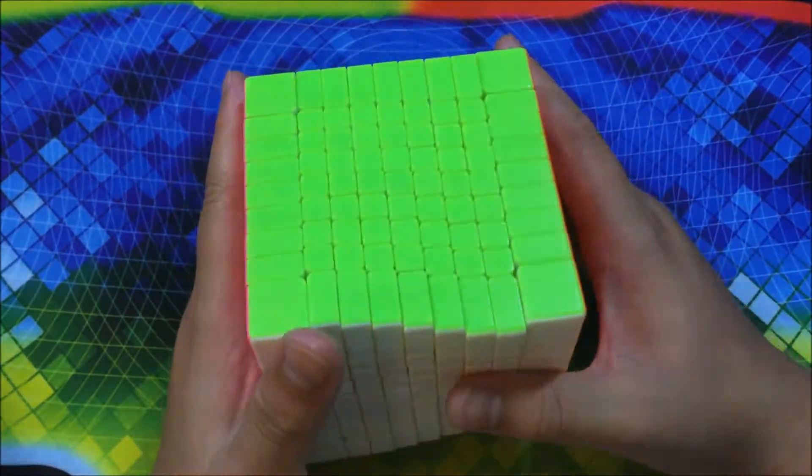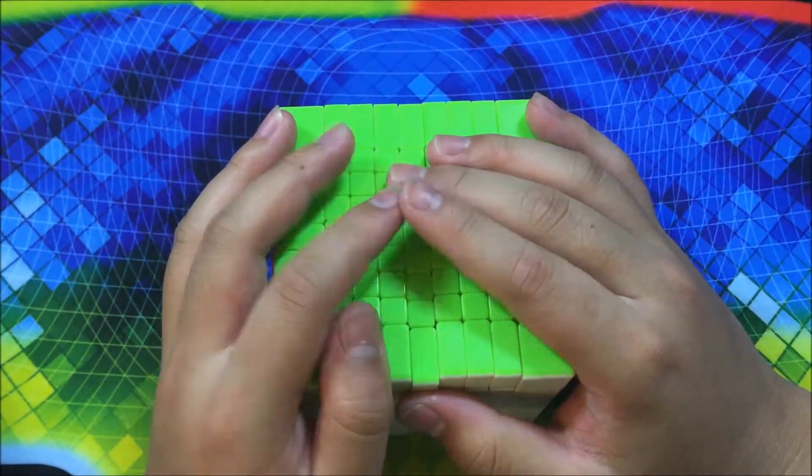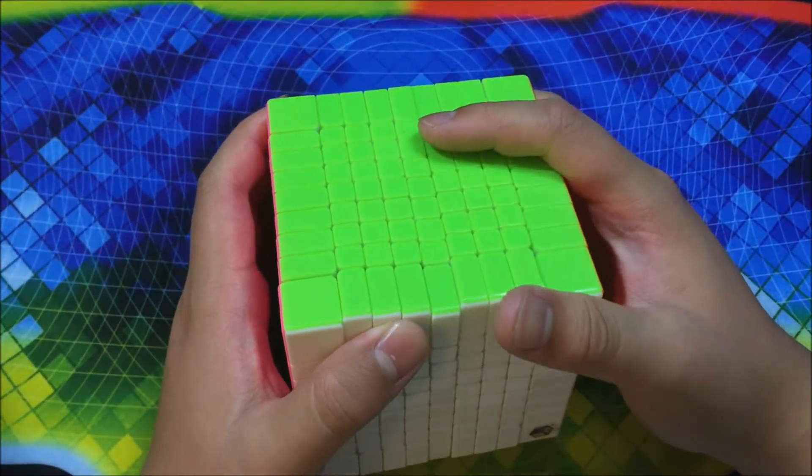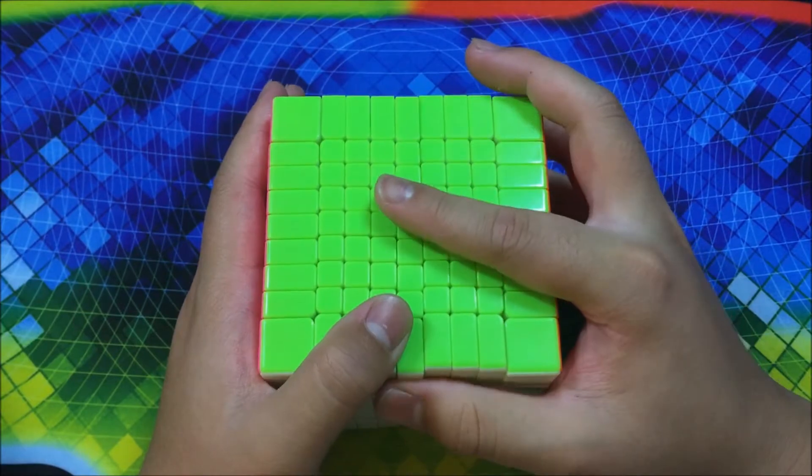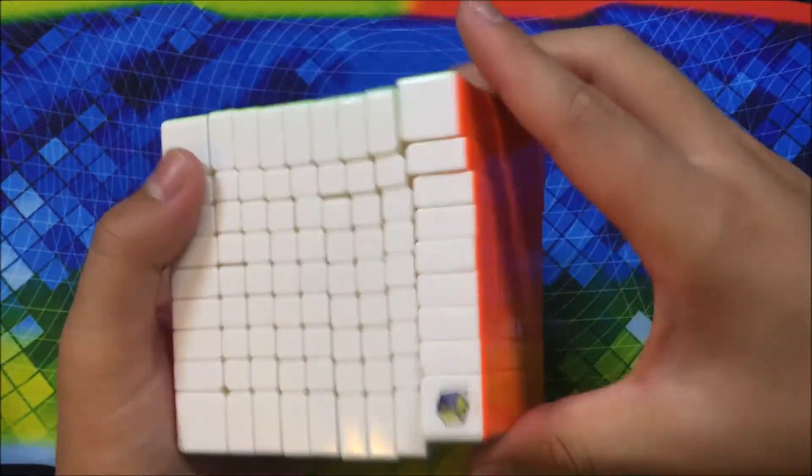Even corner cutting, which is amazing. I did a solve with the Shengxiao 9x9 and got 41 minutes. Then I did a solve with the Yushin 9x9 and actually got 30 minutes. So I actually improved my time by 11 minutes just by using the Yushin 9x9.